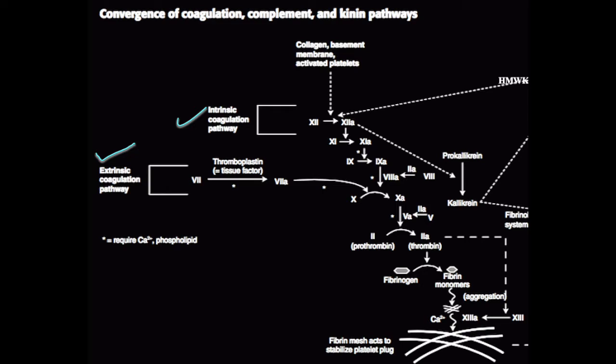Thrombin also converts factor 5 to 5a and factor 8 to 8a, providing positive feedback to amplify the coagulation process. Factor 13a is activated by thrombin as well, which further helps to stabilize the fibrin meshwork.